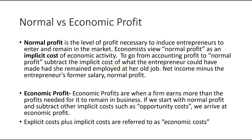Normal profit will always be lower than accounting net income because we start with net income and subtract the entrepreneur's former salary from her old job to arrive at normal profit. That implicit cost — what the entrepreneur could have made had she remained employed — is subtracted. So accounting net income doesn't account for any implicit costs, but normal profit subtracts this one implicit cost.